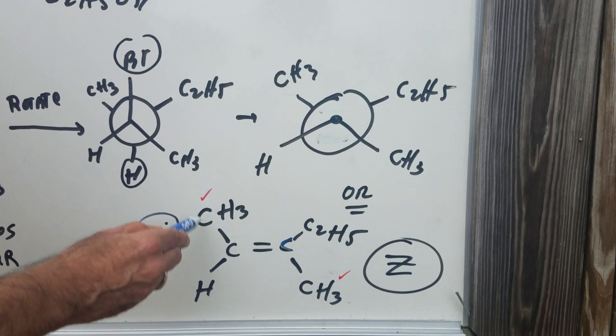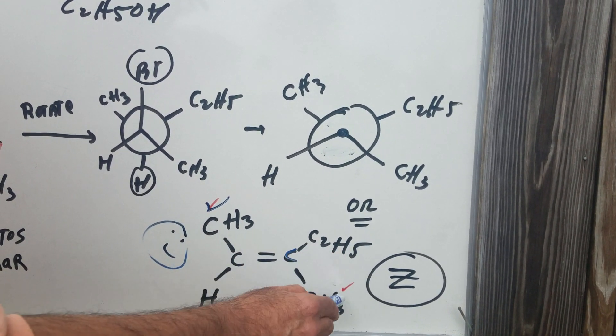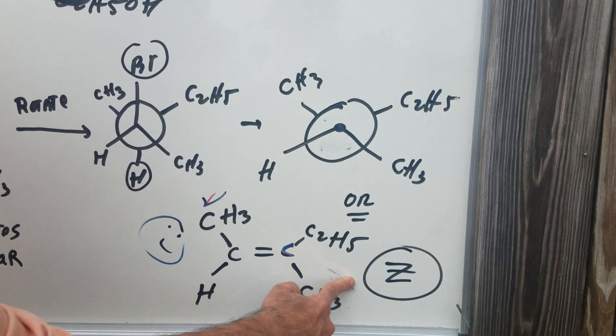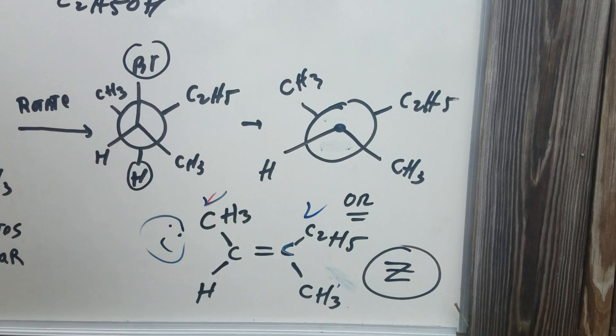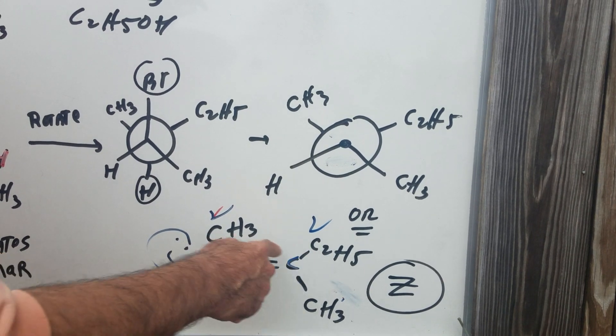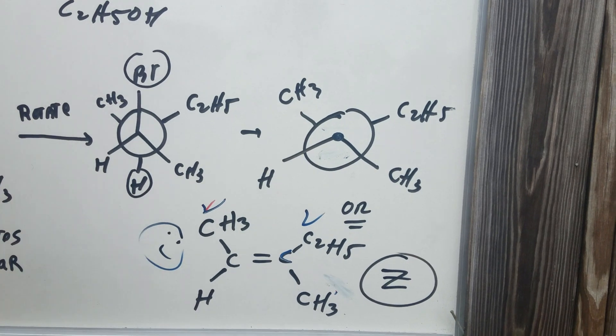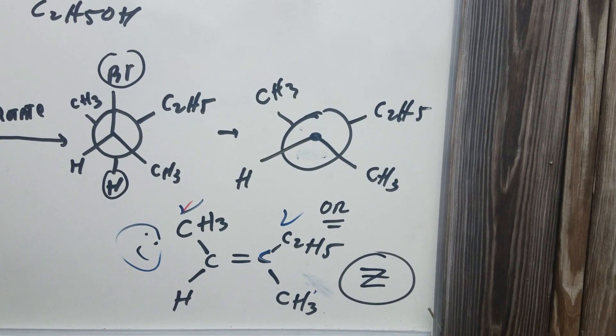And as you can see, if you look at these two groups, this has the higher priority. So I put a check mark. This and this. This has the higher priority. That would be this. So if we see that the two groups of highest priority are on the same side, it means the alkene is a Z. So we would end up with a Z configuration.